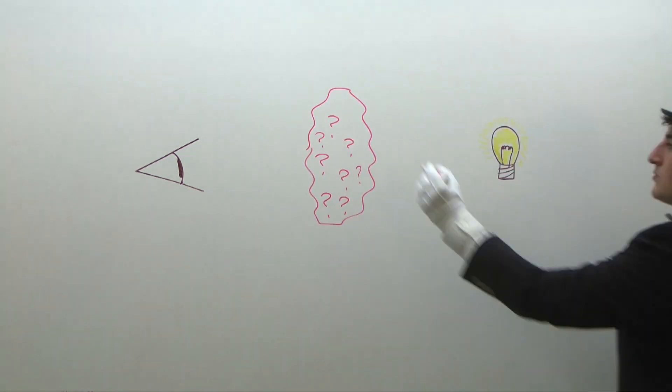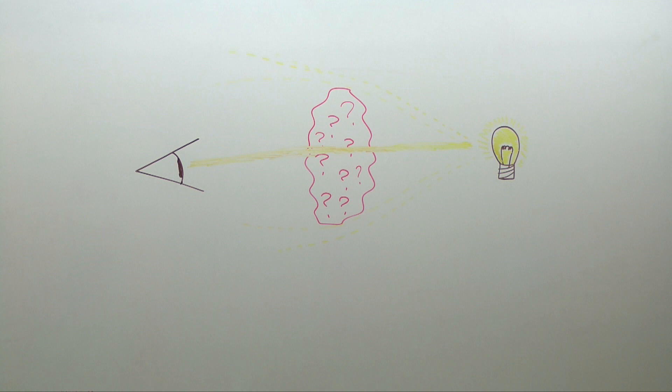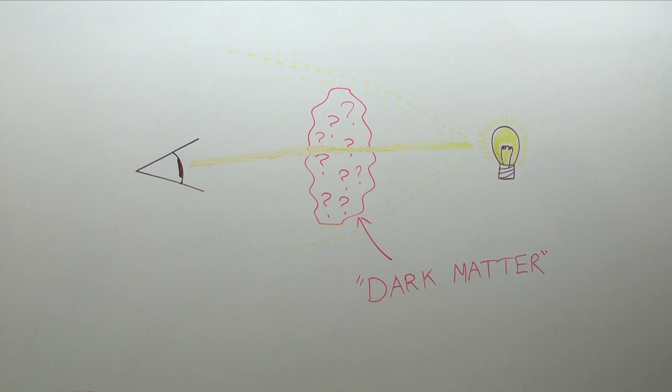This stuff doesn't interact with other normal matter or with light, both of which pass right through. But it does interact gravitationally and provides enough extra heft to the galaxy that things orbit at the speeds we observe. This is indirect evidence for the existence of the mysterious dark matter, whose composition and properties are an open problem in science right now.